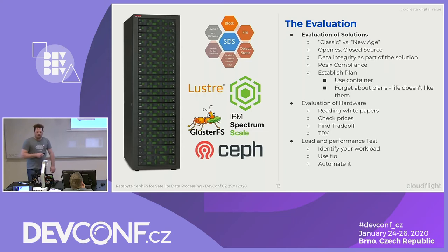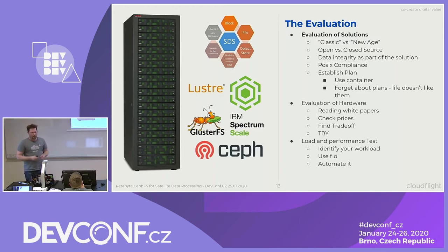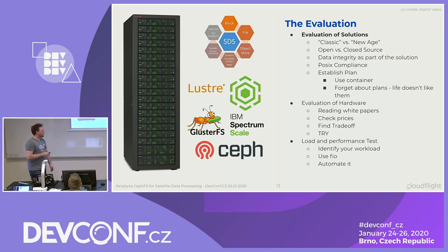What we did was establish a plan to also try one other file system — but forget about plans, life doesn't like them. After about two months of testing, we built up a test setup where we could throw away everything in a few minutes and build up a new cluster — that was done for Ceph and for GlusterFS. But at the end of the day, to be honest, we just tested Ceph. It was okay, it worked out. We had some colleagues who had already done GlusterFS before, and we consulted them, and they said for what you need, go with Ceph.